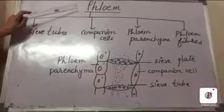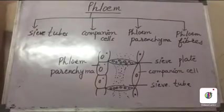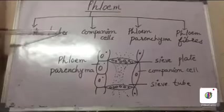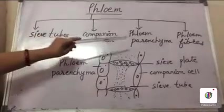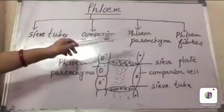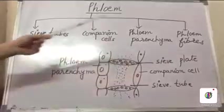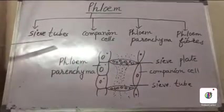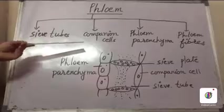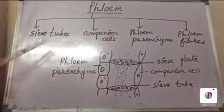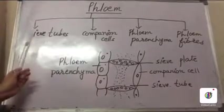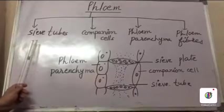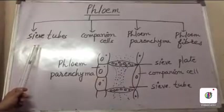Phloem is mostly made up of living cells. It consists of 4 different types of cells: sieve tubes, companion cells, phloem parenchyma and phloem fibres. Out of these, only the fibres are non-living. The rest — sieve tubes, companion cells and phloem parenchyma — are living cells. It is considered as a complex tissue since it is made up of 4 different types of cells.